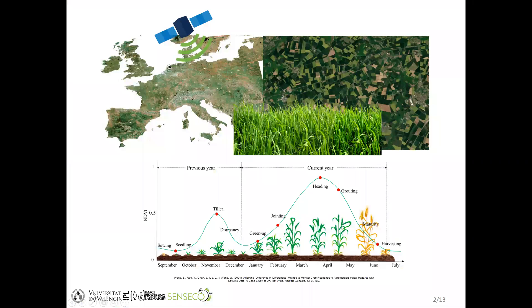Satellite remote sensing data are increasingly used for analyzing dynamic land surface processes at different scales, given the temporal and spatial coverage that it provides, and therefore becoming a valuable tool in relevant contexts like food security and assisting agricultural practices.